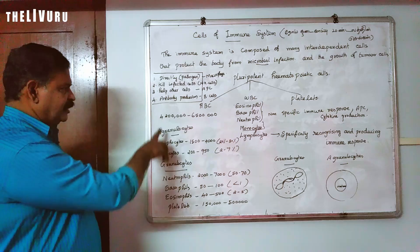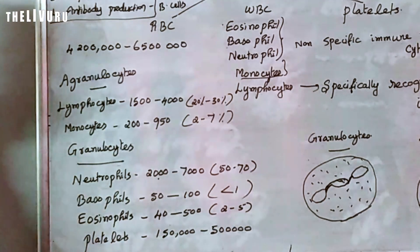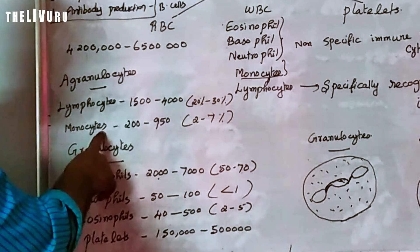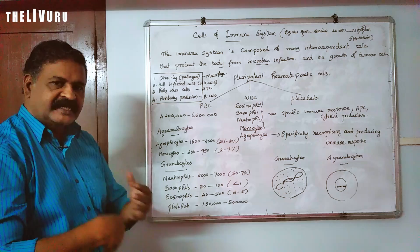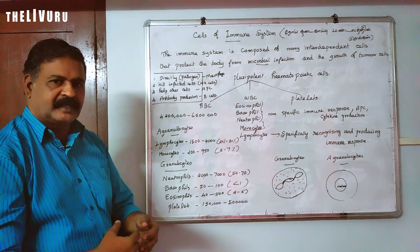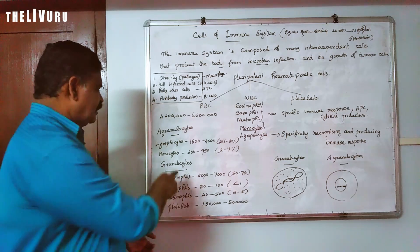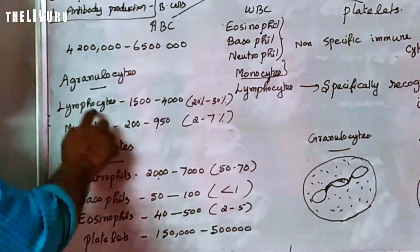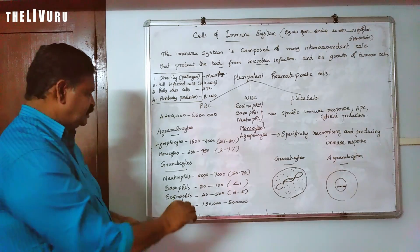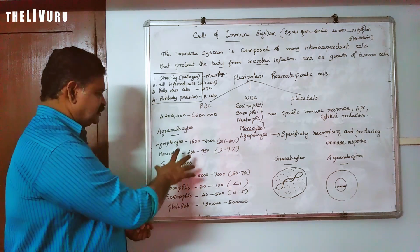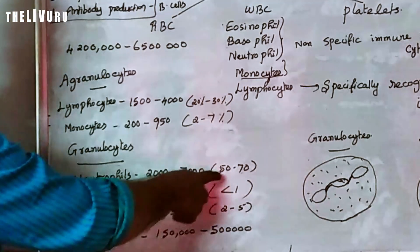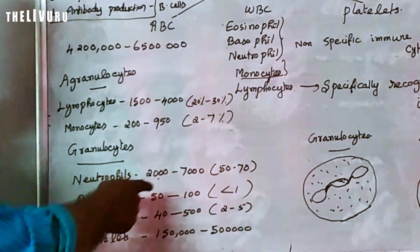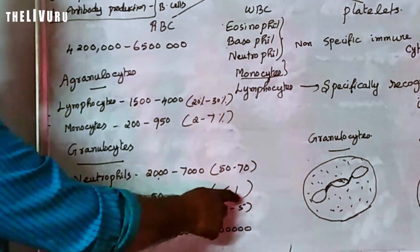Among all WBCs, the largest cells are monocytes — they are known as macrophages in tissue. The smallest WBC is called lymphocytes. Neutrophil makes up 50 to 70%, which is the highest percentage, while basophil is the least at less than 1%.